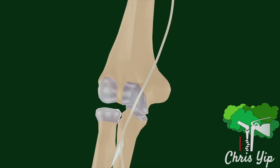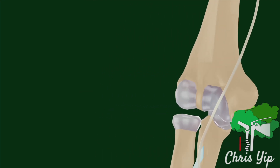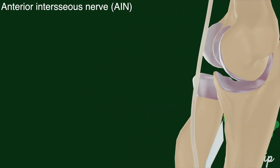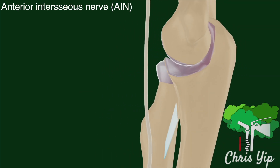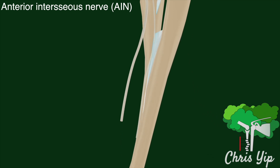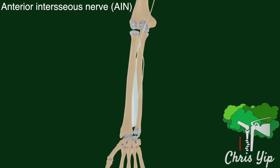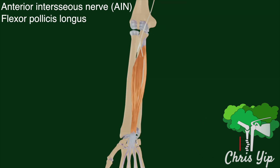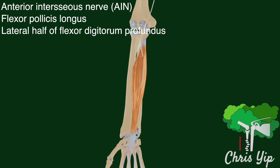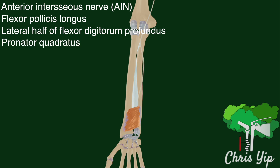In the proximal forearm, the anterior interosseous branch branches off and descends to the interosseous membrane, supplying the flexor pollicis longus, the lateral half of the flexor digitorum profundus, and the pronator quadratus.